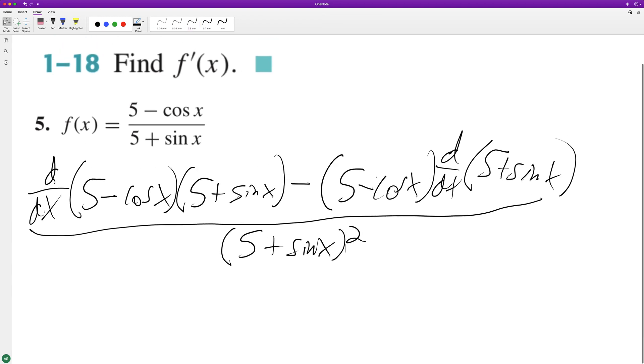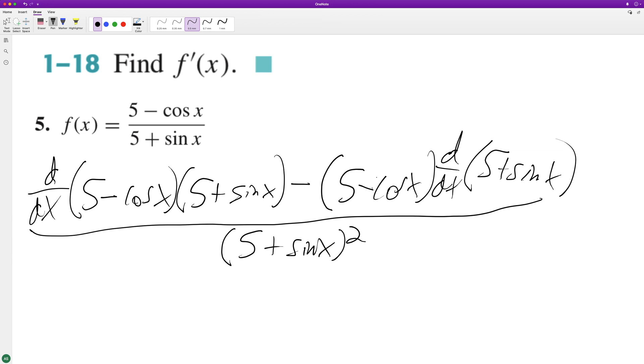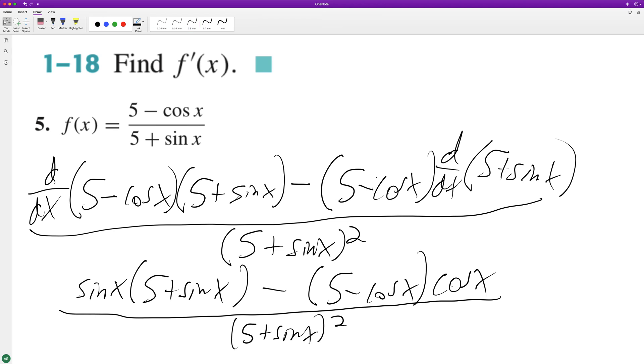So what this ends up being: the derivative on top, the derivative of the constant 5 is 0, minus cosine, negative negative sign ends up being positive sine of x, times 5 plus sine of x, minus 5 minus cosine x. Then the derivative of 5 plus sine of x is going to be just cosine of x, all over 5 plus sine of x squared.